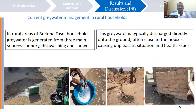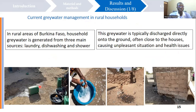In rural Burkina Faso, greywater is produced from three main sources: laundry, dishwashing, and shower. The shower greywater is discharged directly onto the ground outside the houses, but laundry and dishwashing greywater are sometimes discharged inside the houses.